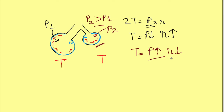Basically, the radius determines how much pressure a given tension generates. If P2 is greater than P1, and gases flow from higher to lower pressure, the air from the smaller alveolus will empty into the larger alveolus. So the smaller alveolus is going to collapse because of the higher pressure generated by the surface tension.